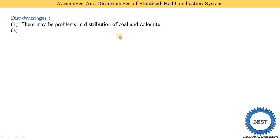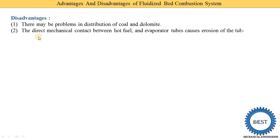The second disadvantage is that direct mechanical contact between the hot fuel and the evaporator tubes causes erosion of the tubes. During operation, the coal is burned very close to the evaporator tubes and they come into direct contact, leading to erosion problems.